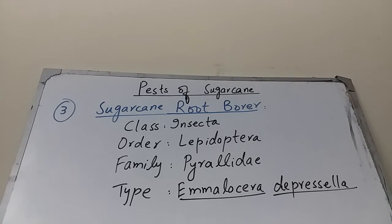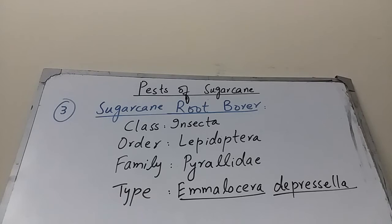The third pest is the Sugarcane Root Borer. Systematic position: Class Insecta, Order Lepidoptera, Family Pyralidae, scientific name Emmalocera depresella. It is a major sugarcane pest occurring in Pakistan and parts of India, infesting sugarcane at all developmental stages. The main damage is caused by the caterpillar or larva, which mainly attacks the roots — hence the name root borer.